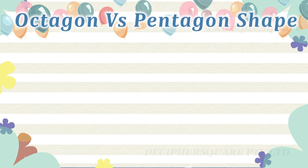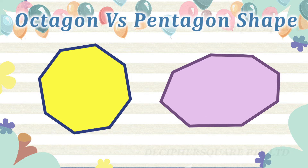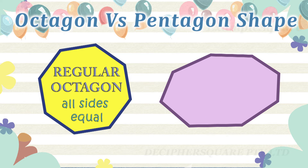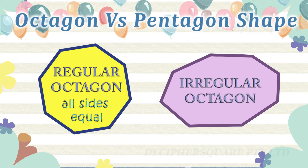Similarly, if all the eight sides of the octagon are equal and all the eight interior angles of the octagon are equal, then it is a regular octagon. Otherwise it is an irregular octagon. Here is an example of a regular and an irregular octagon.